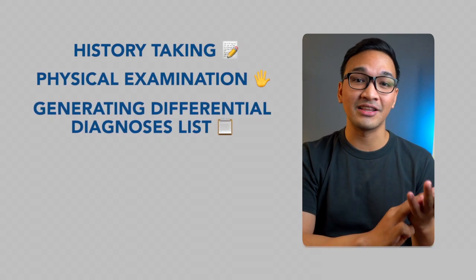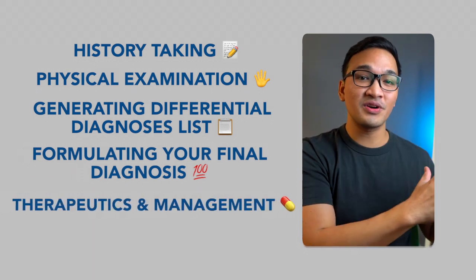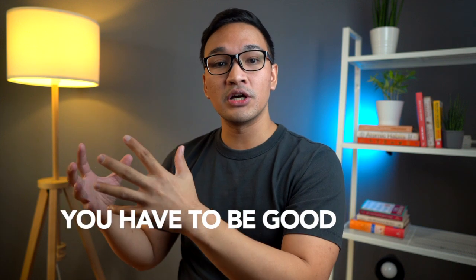Some students do very well in history taking and physical exam, but when it comes to putting it all together to create a list of differentials, they tend to have difficulty. Based on my experience as a preceptor conducting small group discussions with medical students, the key areas in the OSCE are: history taking, physical examination, generating differential diagnoses, formulating a final diagnosis, therapeutics and management, and of course rapport — how you interact with the patient. Did you appear arrogant, authoritative, or indifferent? Or did you come across as friendly, empathetic, and understanding? While grading differs across institutions, the general approach is much the same. You have to be strong in all of these areas, not just one, and you'll reap the benefits when you become a competent and kind doctor.